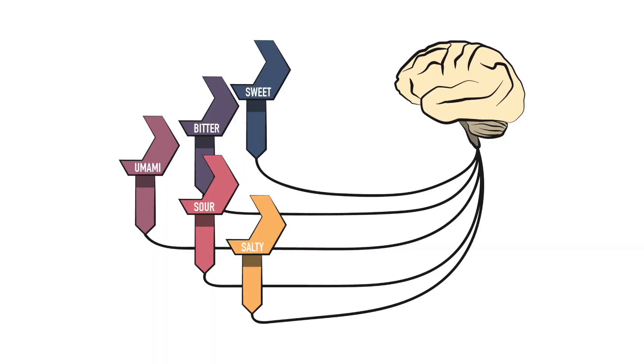Our tongues are covered with the five different taste receptors. When a chemical hits these receptors, it sends a signal to our brain to tell us what we're eating.